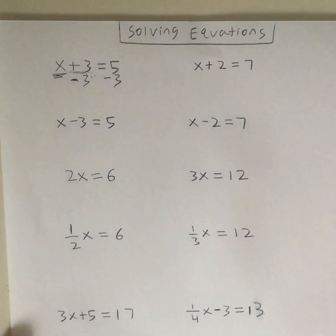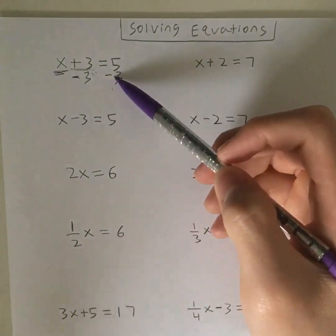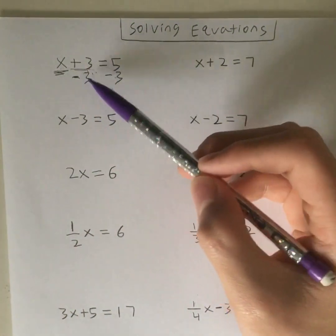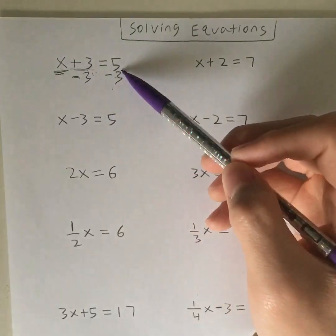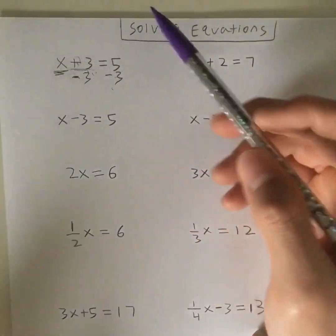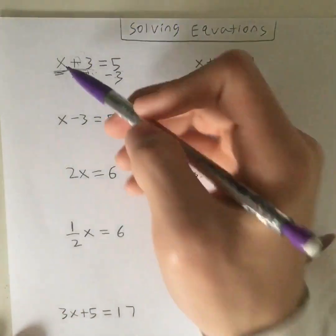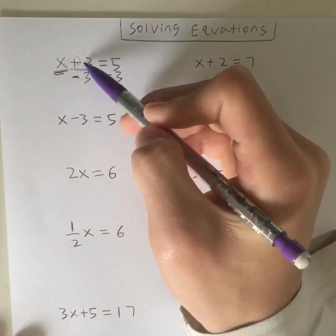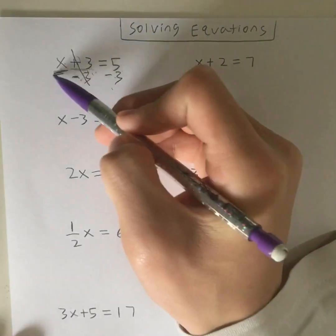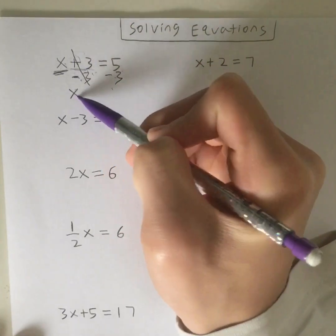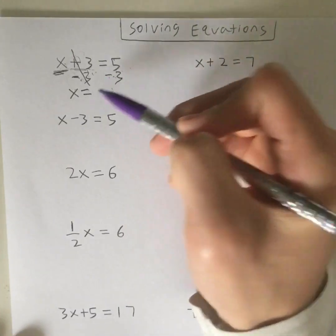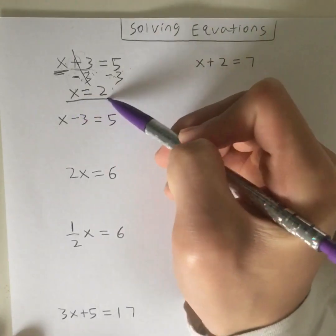Why would I subtract on both sides? Because whenever you're solving an equation, whatever you do on the right side, you have to do on the left side, and whatever you do on the left side, you have to do on the right side. The opposite operation of add is subtract. So we take away this 3, and 3 minus 3 is 0 — this cancels out. That gives us x is equal to 5 minus 3, and what is 5 minus 3? It's 2. So your answer is 2.